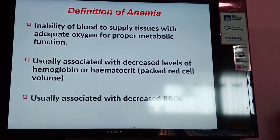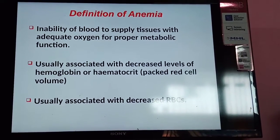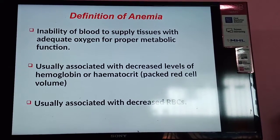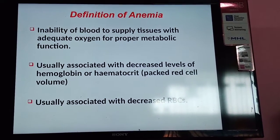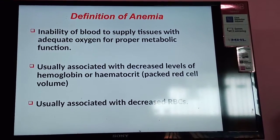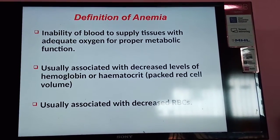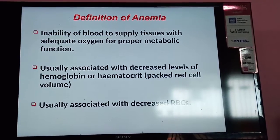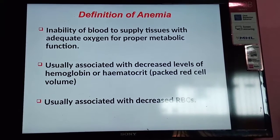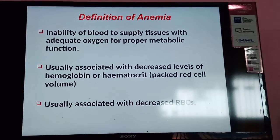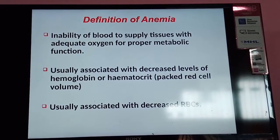This lecture covers special types of anemia, specifically the morphological types. First, a definition: anemia means the inability of blood to supply tissues with adequate oxygen for proper metabolic function. It is usually associated with a decrease in RBC count, a decrease in hemoglobin level, or a decrease in hematocrit value — also known as PCV or packed cell volume.